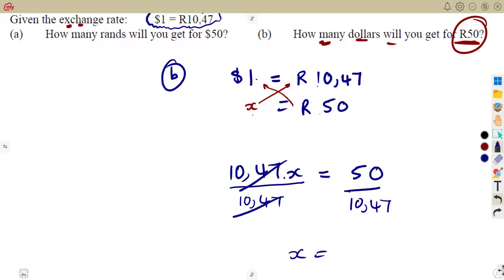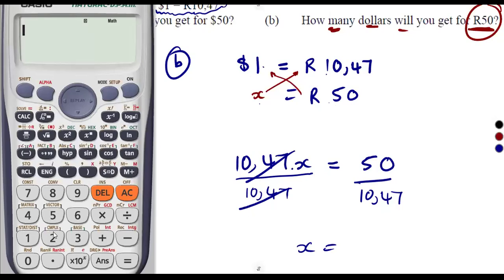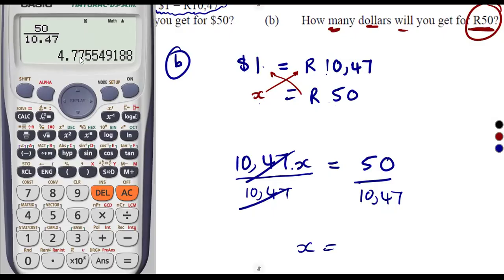Dividing these two, you are going to obtain the amount which is equivalent in dollars, to two decimal places. Let me bring the calculator. We have 50 divided by 10.47, which gives 4.775. Remember, we are dealing with money, so we convert to two decimal places, which gives 4.78.